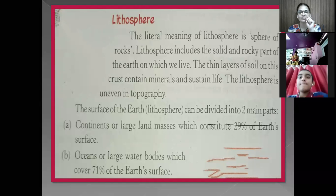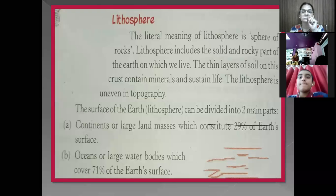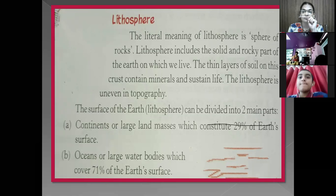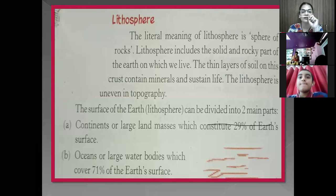Lithosphere is the uneven land. Somewhere we find mountains, somewhere flat plains, deserts or plain surfaces — so it is called uneven. The surface of the earth can be divided into two major parts. The lithosphere can be divided into two main parts.